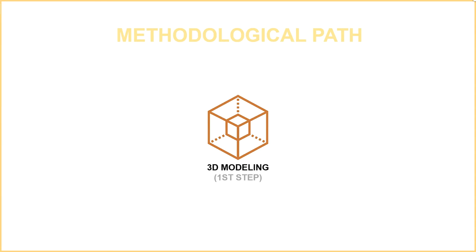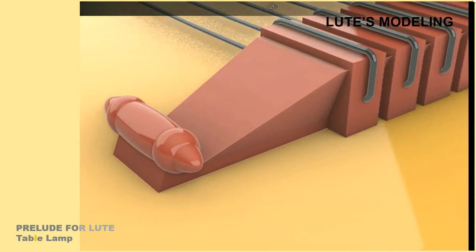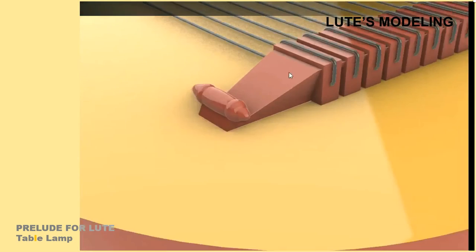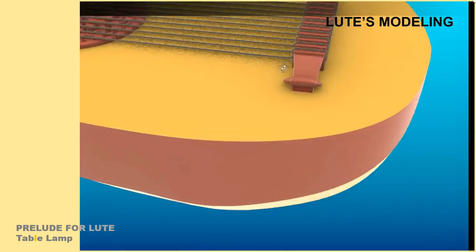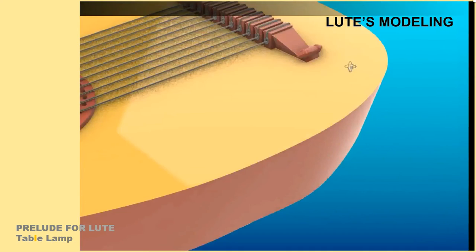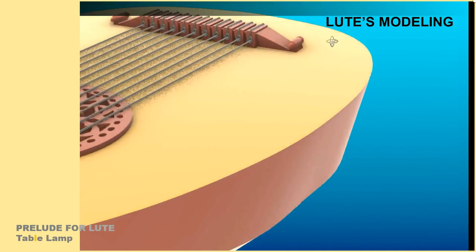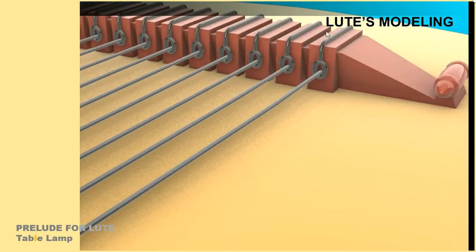The creation process takes place in three steps. The first one is the modeling of the Lute, with the realistic creation of components, music instrument, materials, and colors in Rhinoceros software.